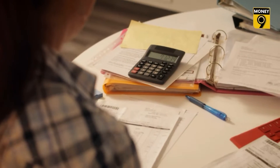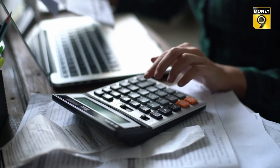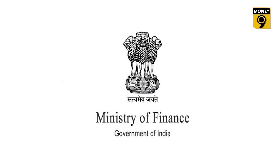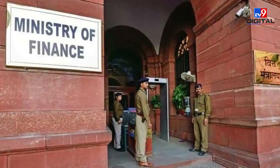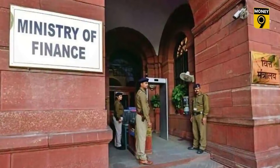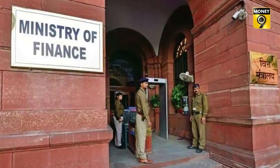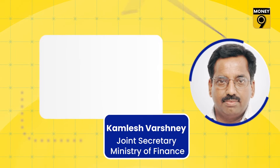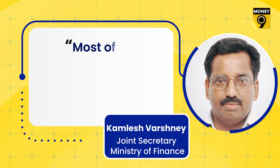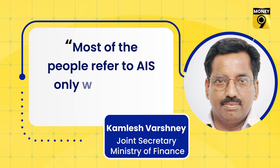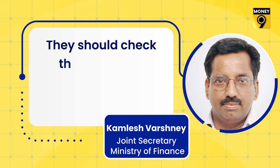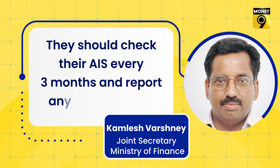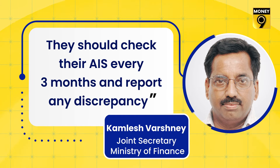Despite this, some people do not refrain from making mistakes. The Finance Ministry has given advice to taxpayers regarding such mistakes. Most people only refer to the Annual Information Statement while filing their income tax return. Joint Secretary of Finance Ministry Kamlesh Varshney said assessees should check their AIS every three months, and if any mistake is found, they should report it so that wrong cases of claiming HRA deduction can be stopped.